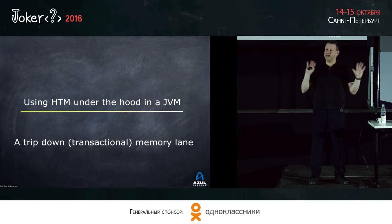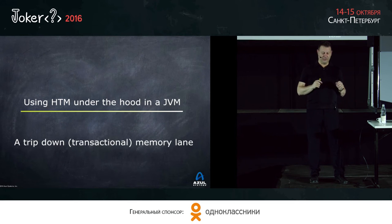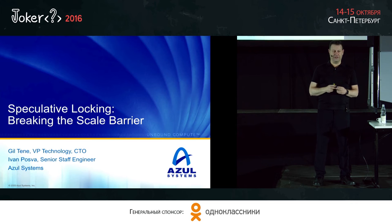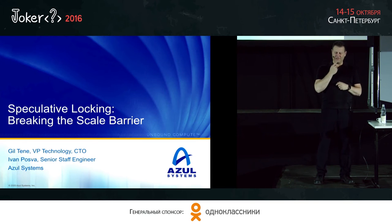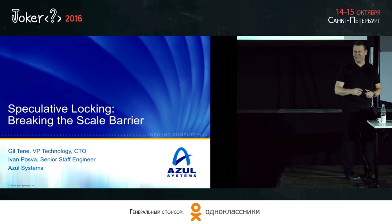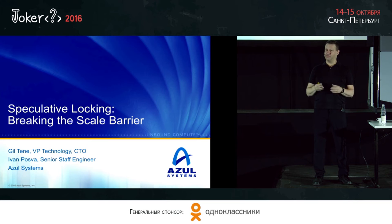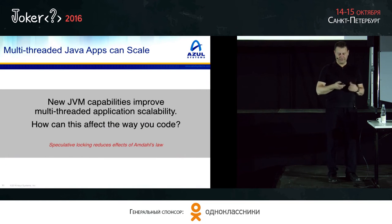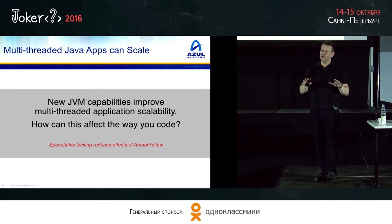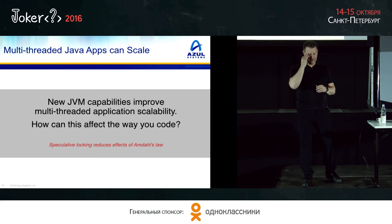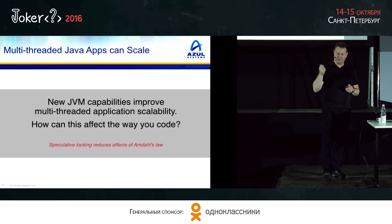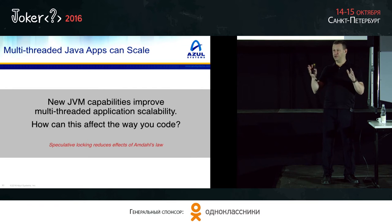I'm switching the slide background here intentionally to a different color. The next set of slides were originally written for a presentation I gave in 2005. When I prepared this presentation, I found my old material and said, 'wow, it's 11 years old and I can use the slides exactly as they are because finally they're actually relevant.' I gave this presentation at JavaOne in Denmark with Ivan Postva, who at the time worked at Azul and went on to Google to build things like the V8 virtual machine. Word for word, what we said then applies now to current hardware and current JVMs — not just ours. There's a new JVM capability that improves multi-threaded application scalability, and it can affect the way you code.